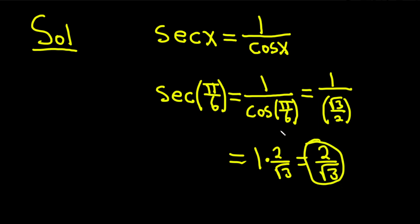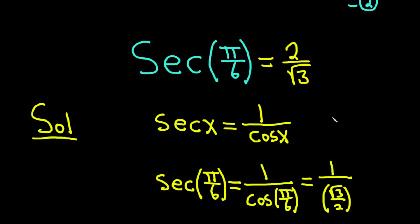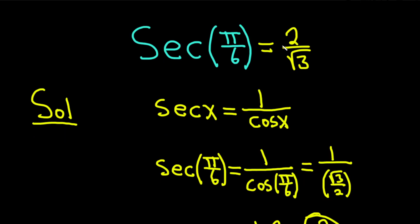And that actually would be the answer. So, the secant of pi over 6 is equal to 2 over the square root of 3. Now, you could leave your answer like this, or you could rationalize it. I am just going to leave it.